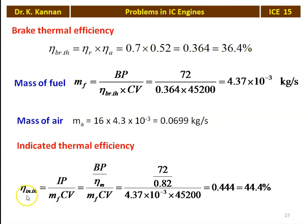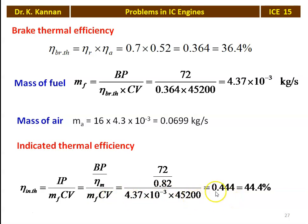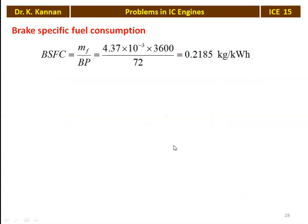Indicated thermal efficiency = IP / (M_F × CV). Since IP = BP / η_mech, this becomes: (72/0.82) / (4.37×10⁻³ × 45200) = 0.444 = 44.4%. Brake specific fuel consumption BSFC = M_F × 3600 / BP = (4.37×10⁻³ × 3600) / 72 = 0.2185 kg/kWh.